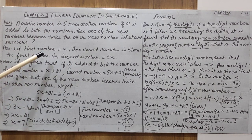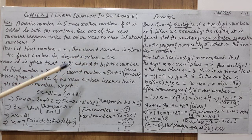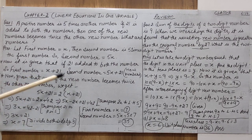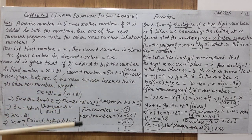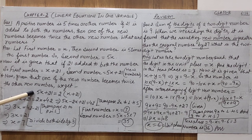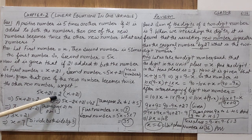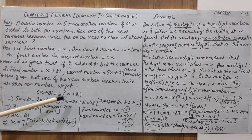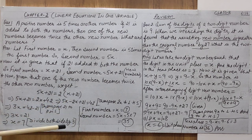To summarize: first condition gives first number x and second number 5x. Second condition: adding 21 gives first new number x + 21 and second new number 5x + 21. Third condition: one number is twice the other, so the equation is 5x + 21 = 2(x + 21). We get variables and constants on both sides.